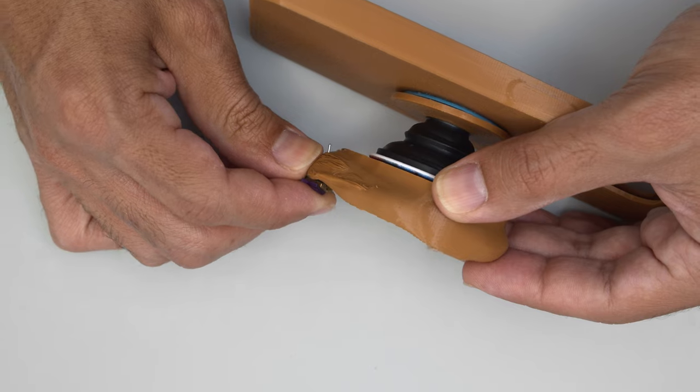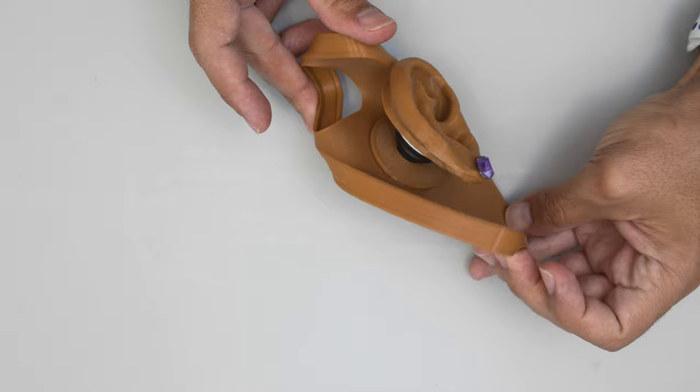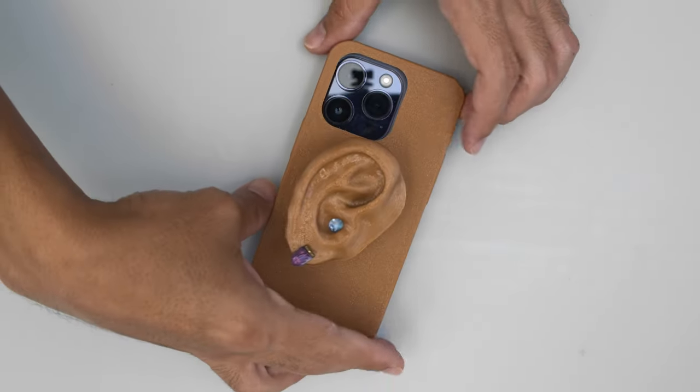Because it's flexible you can add some personality by accessorizing the earlobe with an earring. The phone case features a cutout for the camera array and the edges grip over the screen to provide protection.